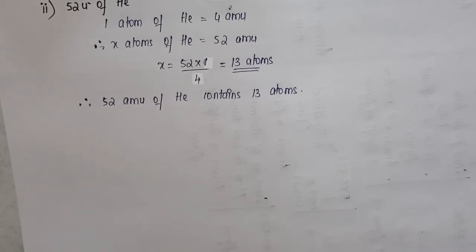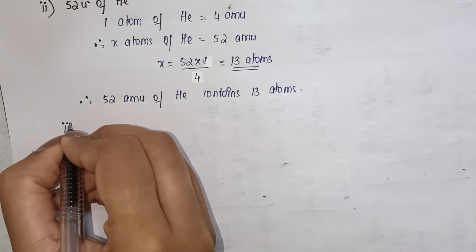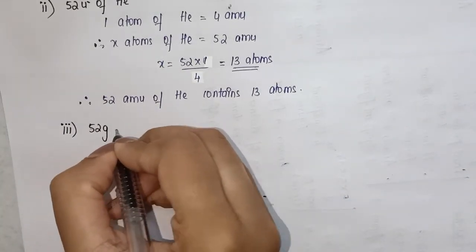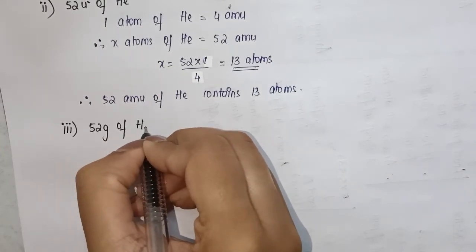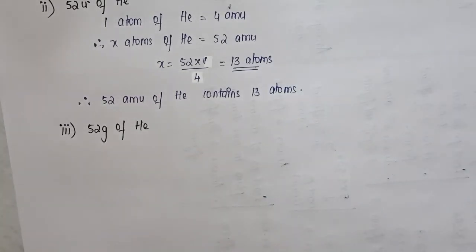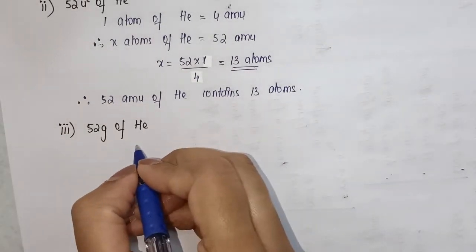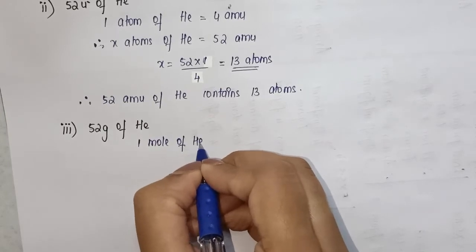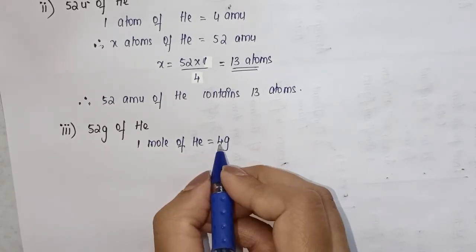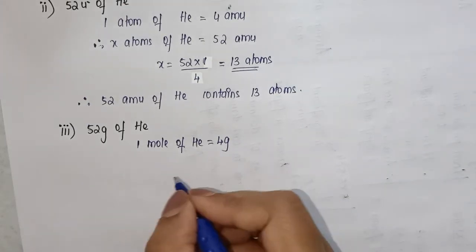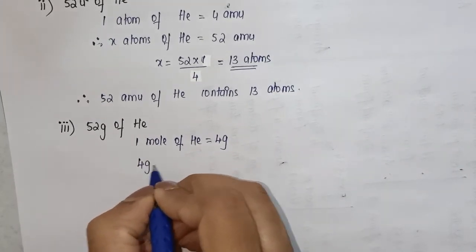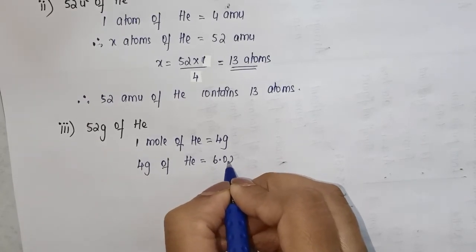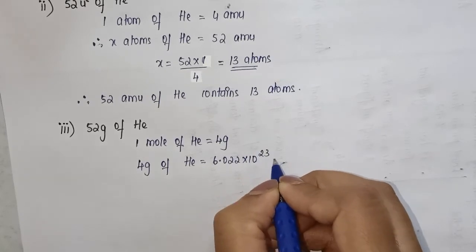For the third question we have 52 grams of helium. Since grams are given, we use the mole relationship: one mole of helium is equal to 4 grams, which is the atomic mass of helium. So 4 grams of helium is equal to 6.022 × 10²³ atoms.